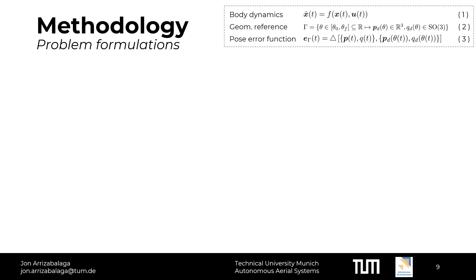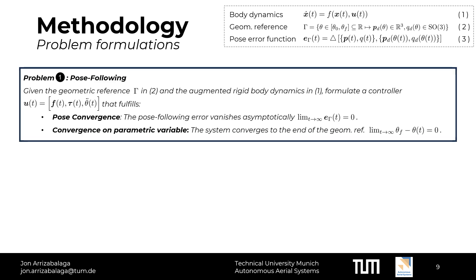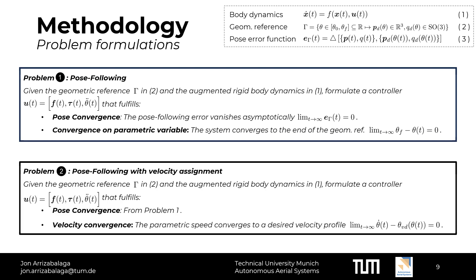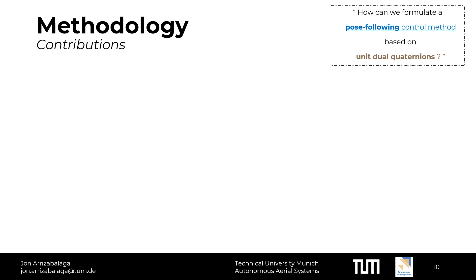Having settled the preliminaries, let's move on to the formal definition of the problems that we solve in this work. First, we define the pose-following problem. Given the geometric reference gamma in equation 2 and the augmented rigid body dynamics in equation 1, formulate a controller that fulfills pose-convergence and convergence on parametric variables. The former ensures that the pose error vanishes asymptotically, while the latter guarantees that the system reaches the end of the geometric reference. Second, we extend the first problem to pose-following with velocity assignment. The key distinction is that it replaces the convergence on parametric variable with velocity convergence. The aim is to make the parametric speed converge to a predetermined velocity profile.